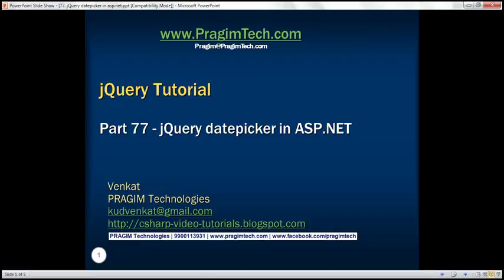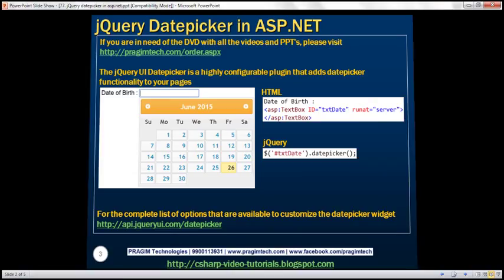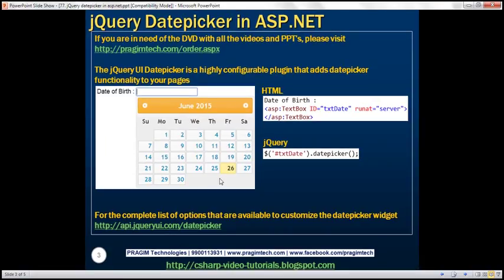This is part 77 of jQuery tutorial. In this video, we'll discuss how to implement date picker functionality in an ASP.NET web form using the jQuery date picker widget. As soon as the date of birth text box receives focus, we want a calendar to pop up. And as soon as we select a date from the calendar, we want that selected date to be populated within the date of birth text box and the calendar should disappear. This is very easy to achieve using the jQuery date picker widget.